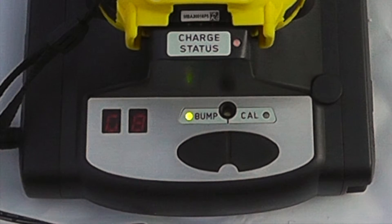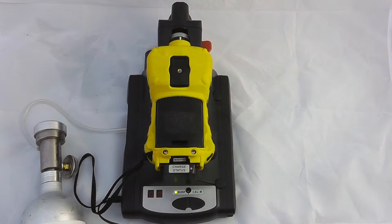We can now see that is now performing a bump test on the instrument. Depending on how the controller is set up if the unit fails the bump test it can then go automatically into a full calibration cycle but in this case we're just going to perform a bump test.